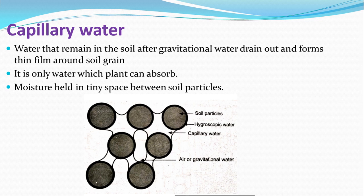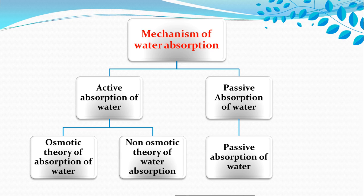Now we will start the mechanism of absorption of water. The mechanism of absorption of water can be explained by two theories: active absorption theory and passive absorption theory. The mechanism of active absorption of water is explained by two theories: the osmotic theory of absorption of water and the non-osmotic theory of water absorption.